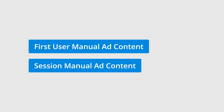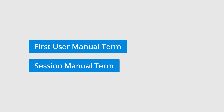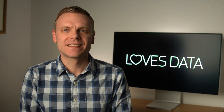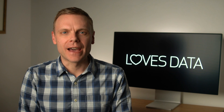You'll be able to use the first user manual ad content and the session manual ad content dimensions to report on your content tags. And you'll also be able to use the first user manual term and the session manual term dimensions for your term tags. The metrics and dimensions we've discussed are still rolling out, so keep an eye out for when they're added to your GA4 properties.